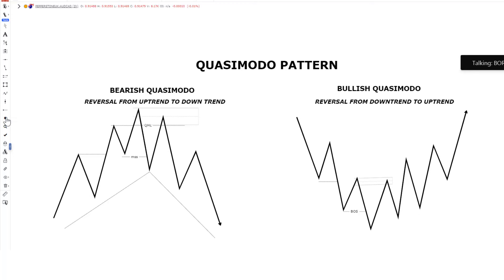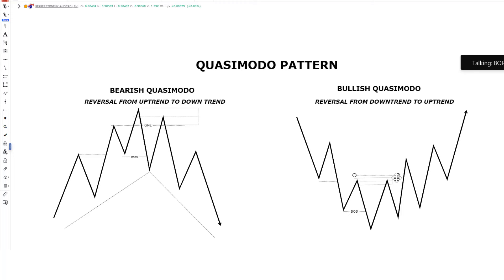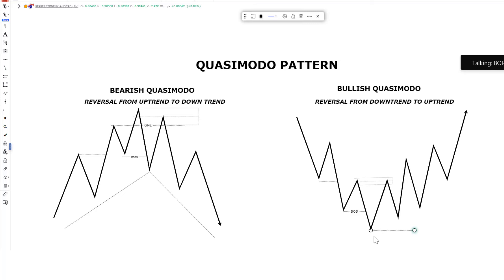Have it in mind — for this QML level to be a valid one, price has to break above this particular high. In this case, what are we seeing? Price is reacting from the supply level and it failed to break above this high. Since price has failed to break above this particular high, this indicates that it's not yet confirmed as our QML level. Price mitigates the level and we have a good reaction to the downside. After the reaction to the downside, which was not able to take this particular low — because if price takes this low, it indicates that you're going to continue with a downtrend.